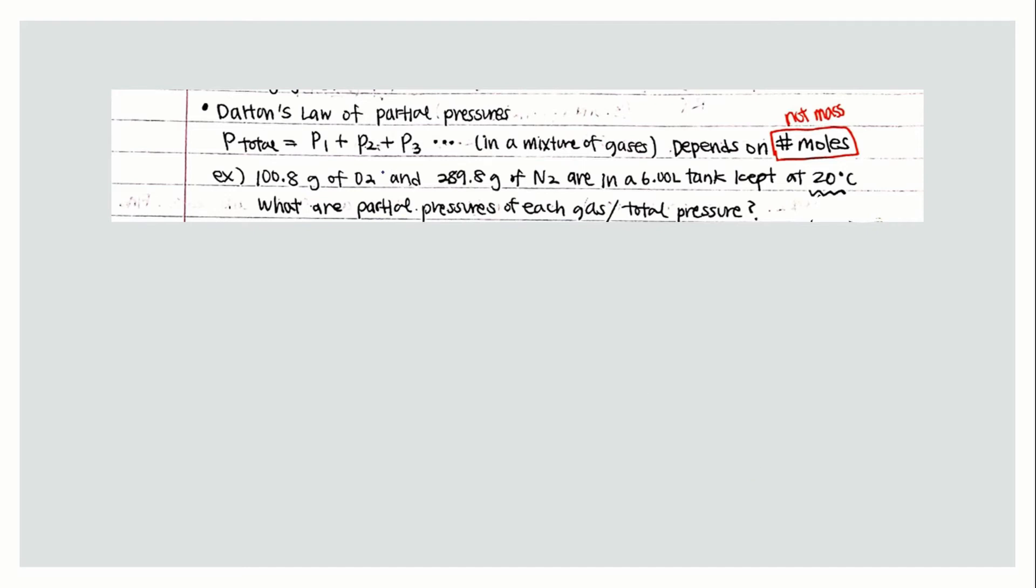Next is Dalton's law. Dalton proposed that the total pressure equals the individual pressures of each gas in a mixture, and it depends on the number of moles, not the mass.